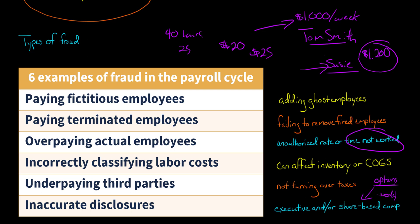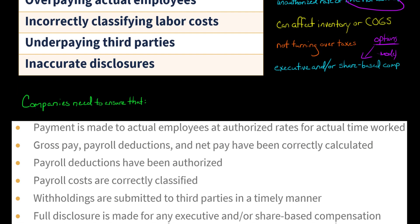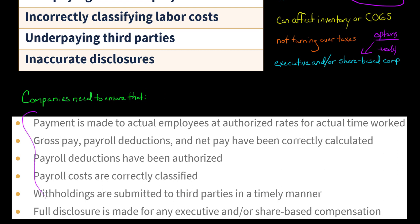There's an element of estimation and judgment involved, and whenever there's estimation and judgment in calculating an accounting number, there's a potential for fraud. We'll talk about those more in the videos to come. For right now, what I want you to know is that companies really need to ensure the following things. They can set up internal controls, and the auditor would go over those internal controls.